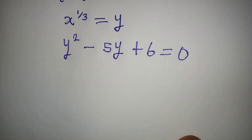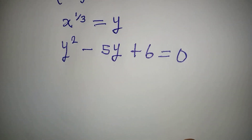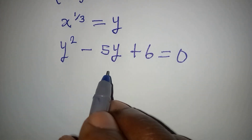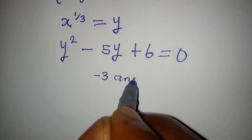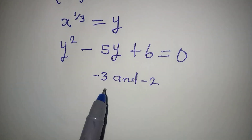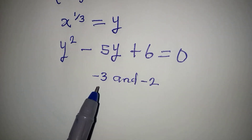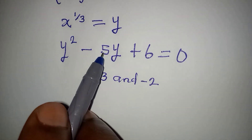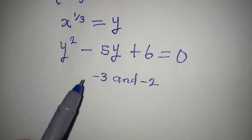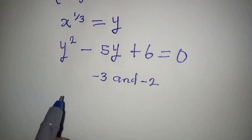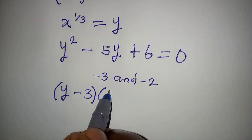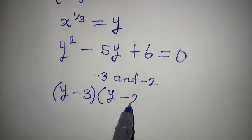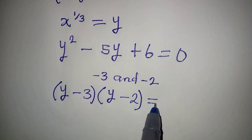Now we have a quadratic equation that we can solve by using the factorization method. To factorize this we look for two numbers — minus 3 and minus 2 — because minus 3 times minus 2 gives us plus 6, and minus 3 minus 2 gives us minus 5. So the factors of this quadratic equation are y minus 3 and y minus 2, giving us (y minus 3)(y minus 2) equal to 0.